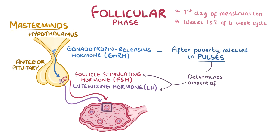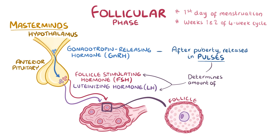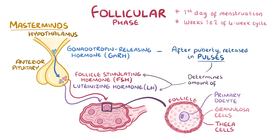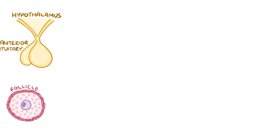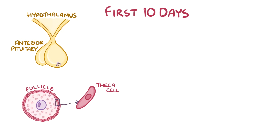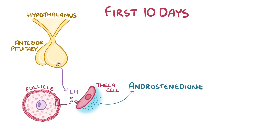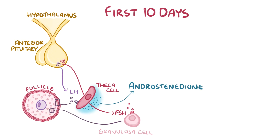These pituitary hormones control the maturation of the ovarian follicles, each of which is initially made up of an immature sex cell, or primary oocyte, surrounded by layers of theca and granulosa cells — the hormone-secreting cells of the ovary. Over the course of the follicular phase, these oocyte-containing follicles grow and compete for a chance at ovulation. During the first 10 days, theca cells develop receptors and bind luteinizing hormone and, in response, secrete large amounts of androstenedione, an androgen hormone. Granulosa cells bind FSH and in response produce the enzyme aromatase.